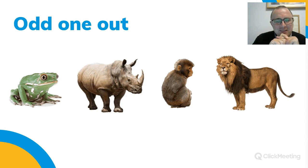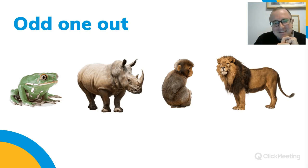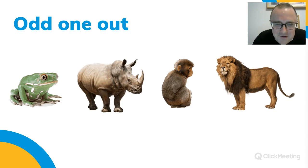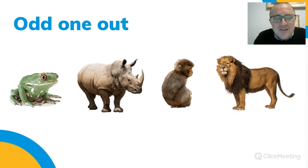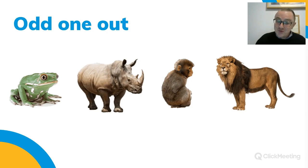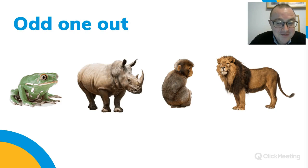Alex says the rhino. Simon says the frog. Paul says the lion — let's hear why. The lion is facing a different direction — that's a good one! It could be that the lion is facing a different direction from the others.